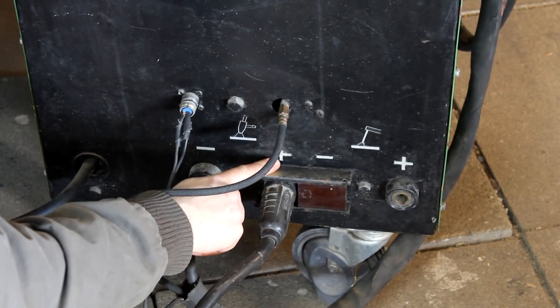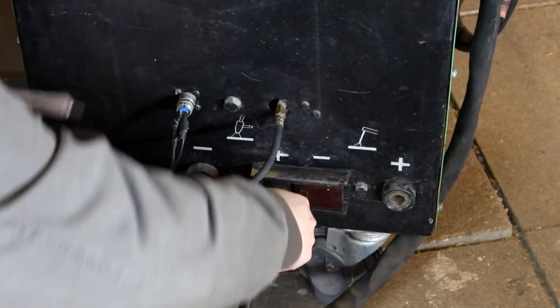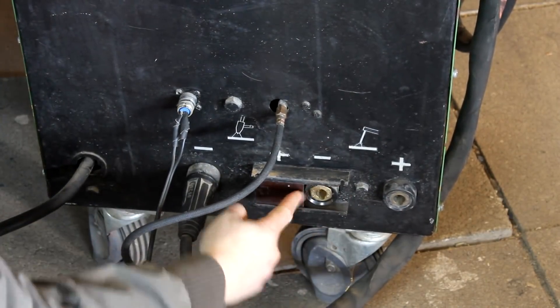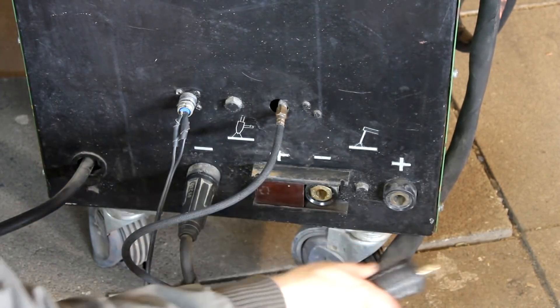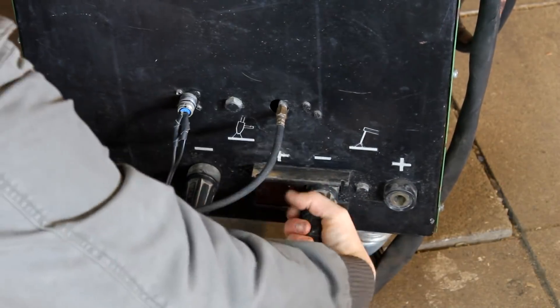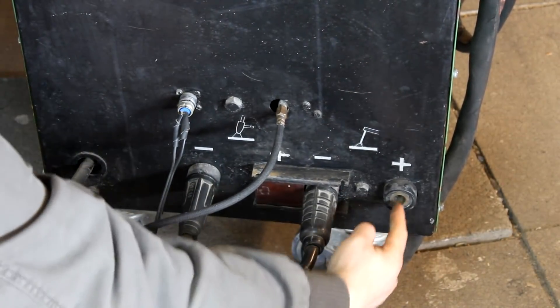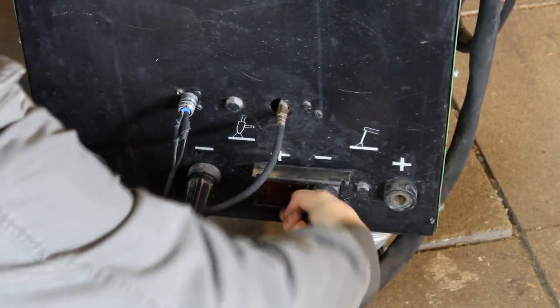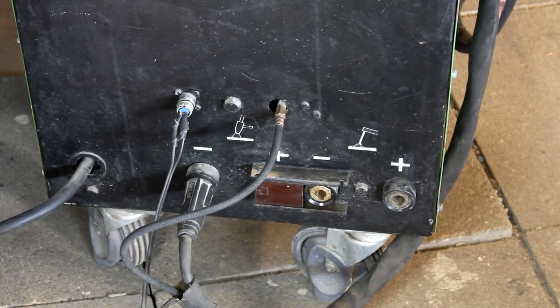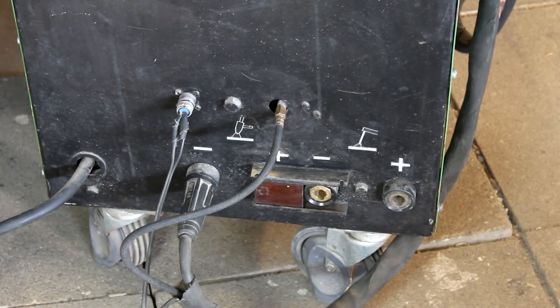And they also installed this little board here that can slide left or right and will always block either the positive or the negative output side of the machine. And they did this so that you would always pick the right jack for the welding process that you're using. Because as I said, when TIG welding, you typically connect the plus pole to the ground clamp and the workpiece. While when using MMA, it's the other way around.